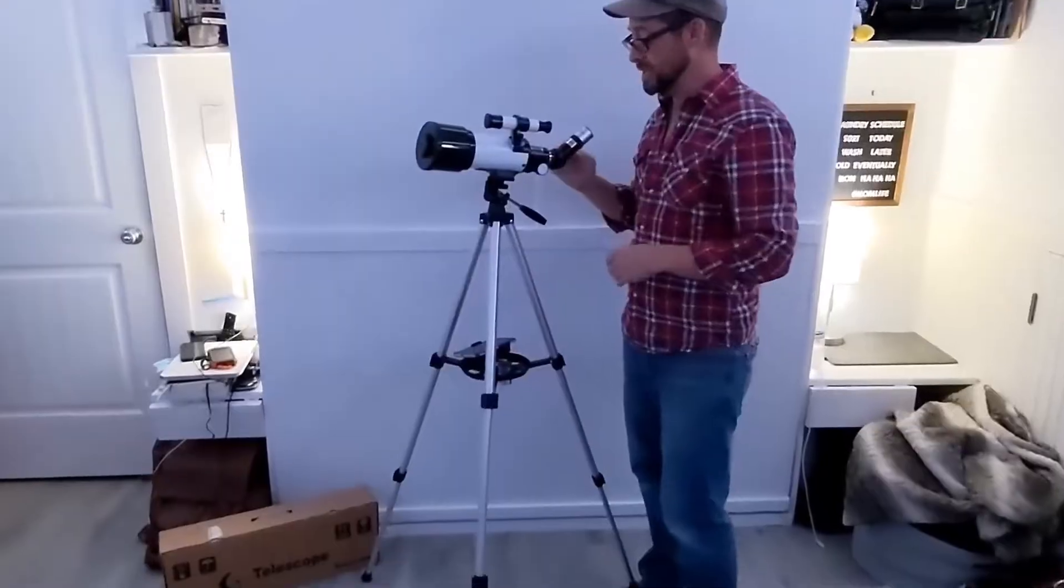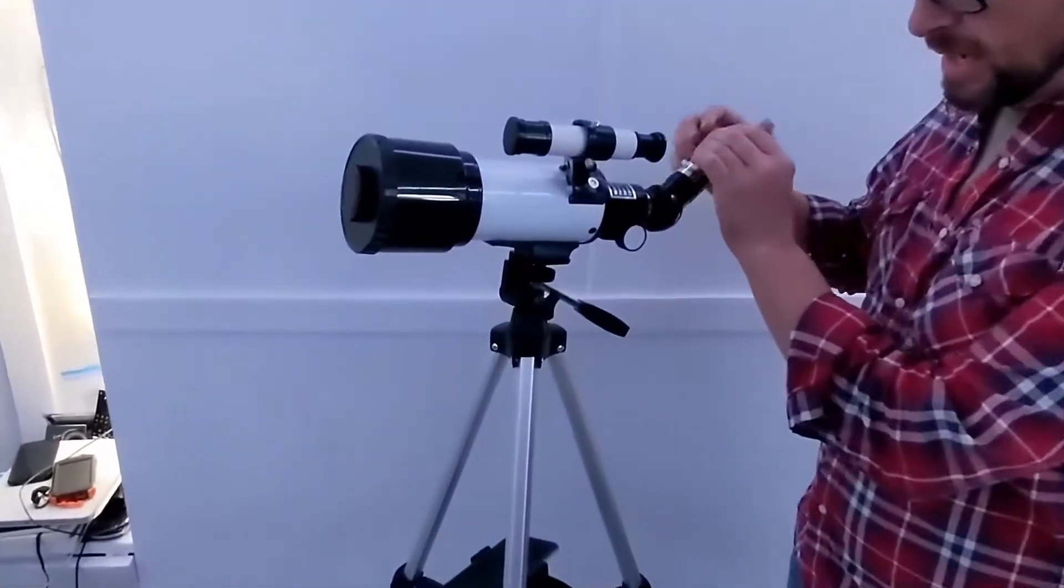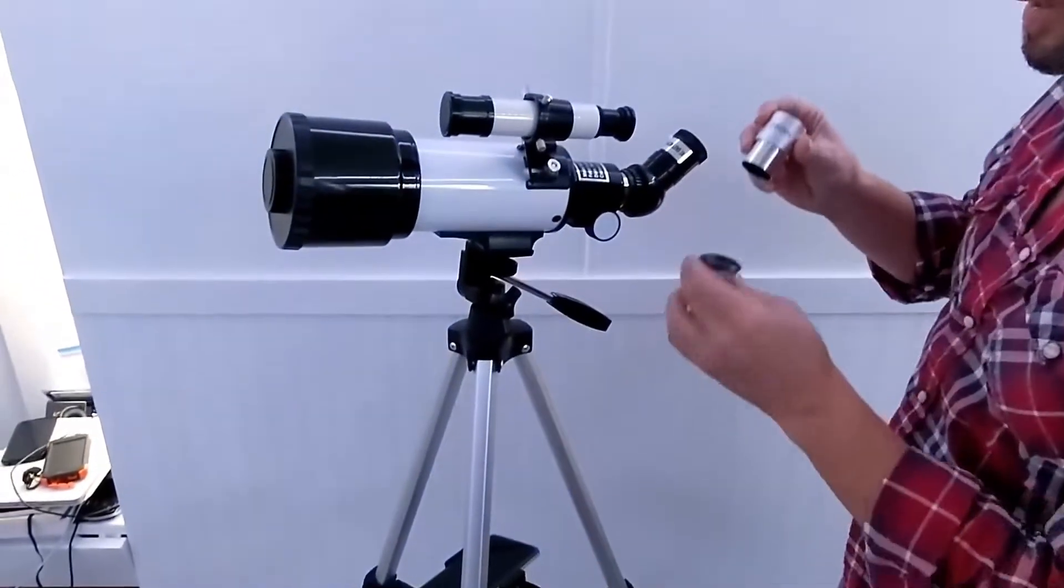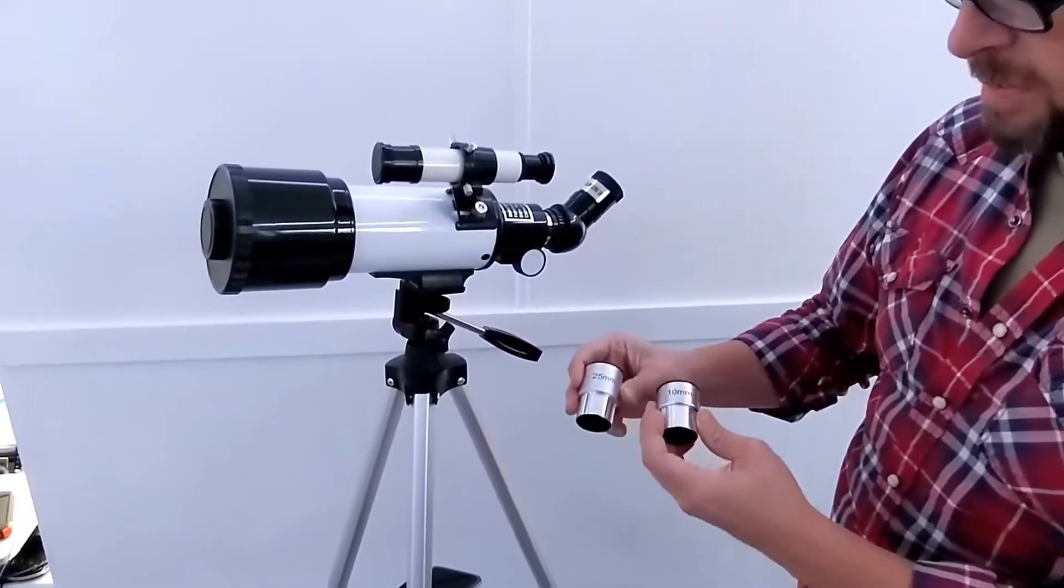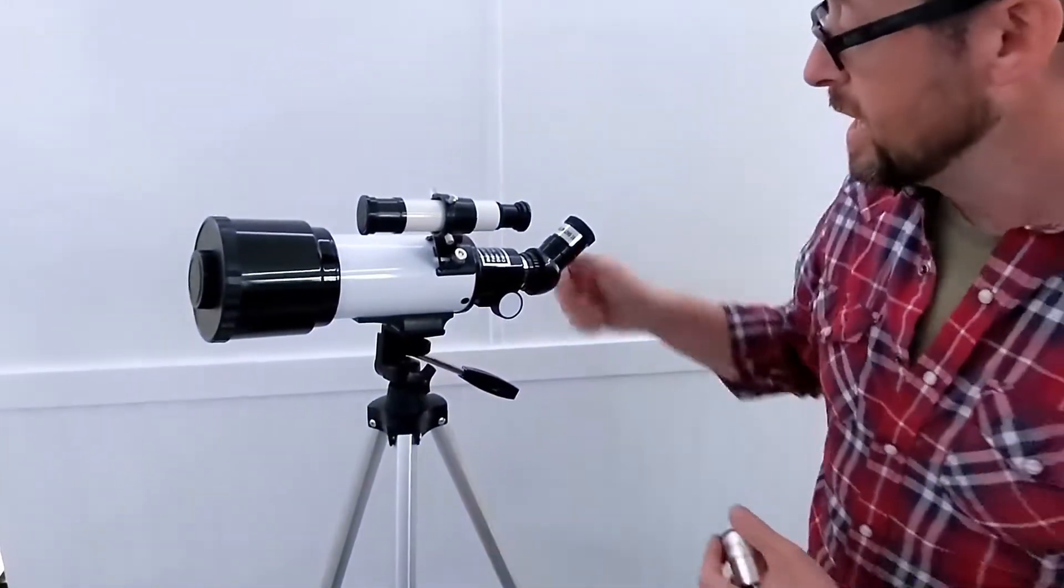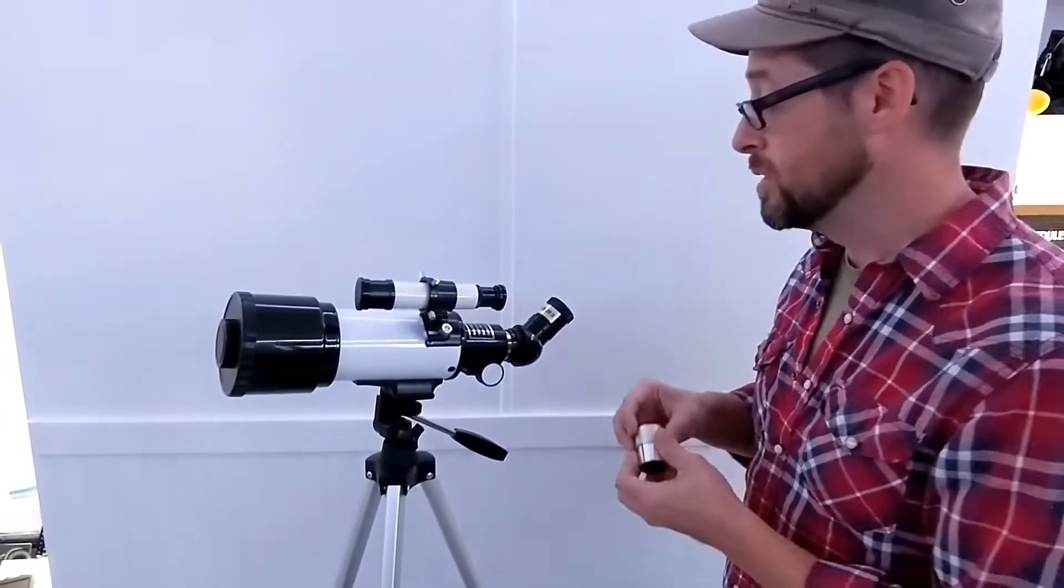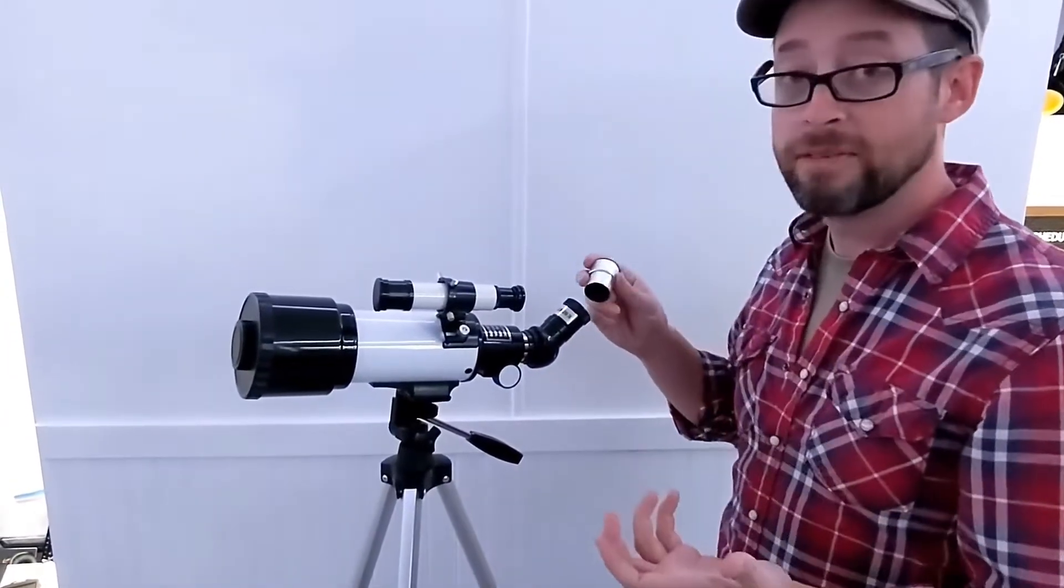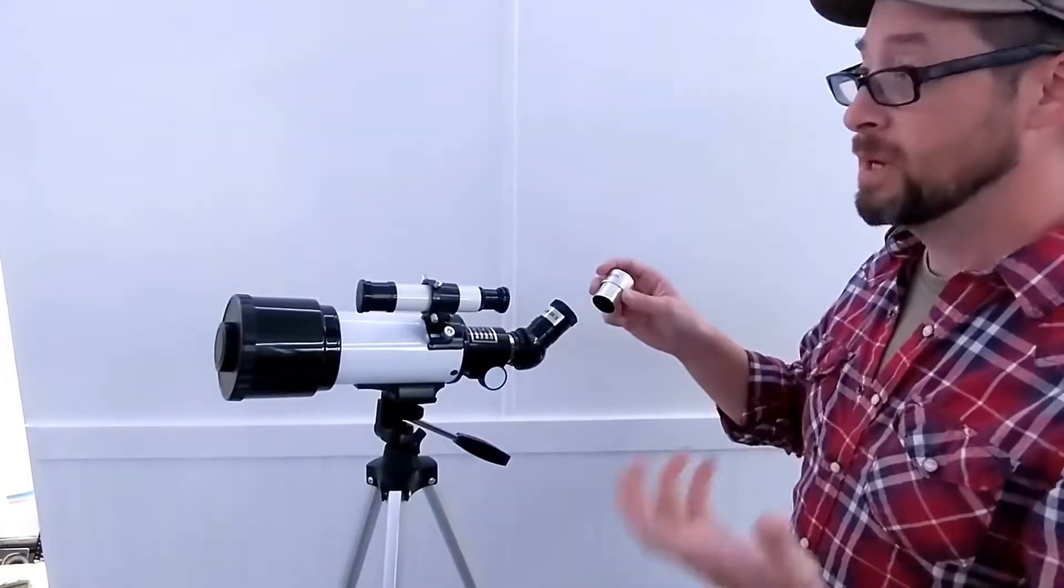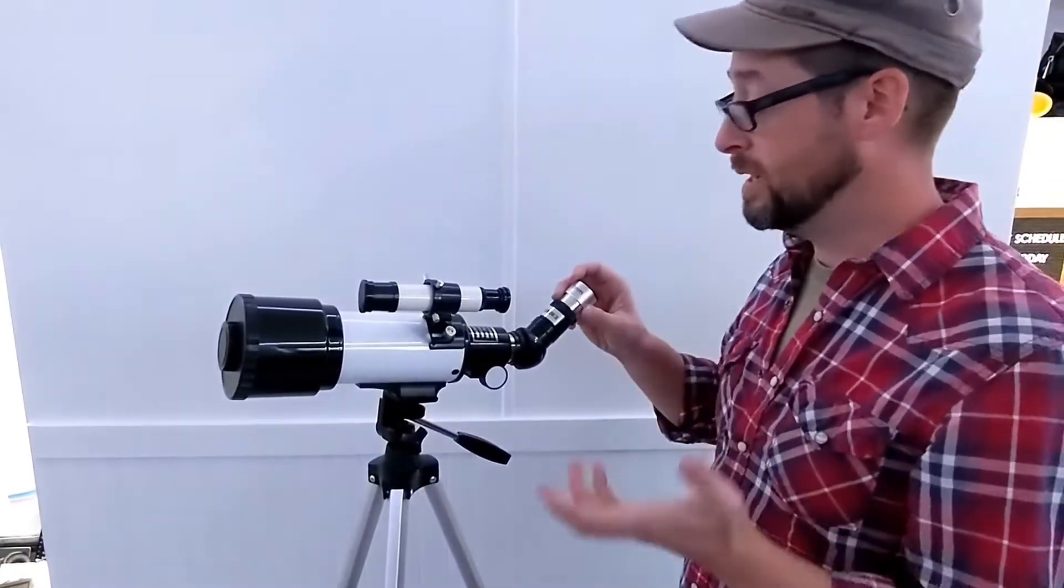If we take a look at the telescope itself, it comes with two different little lenses, a 10 millimeter and a 25 millimeter, as well as this Barlow lens that has three times multiplication, so when you're looking at it you can get anywhere from 150 millimeter multiplication to 15.